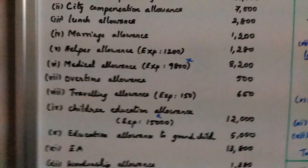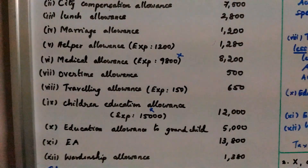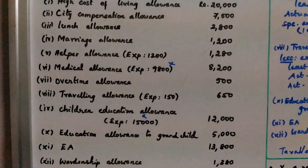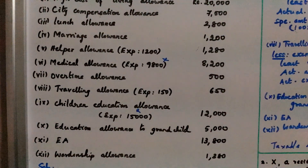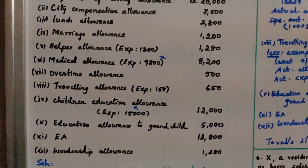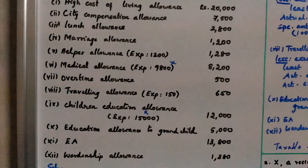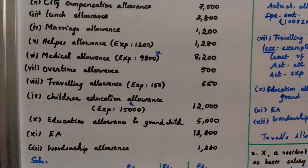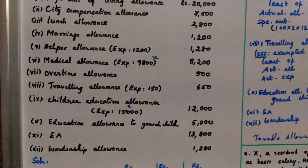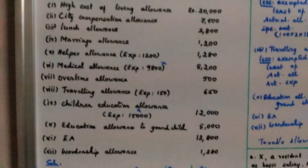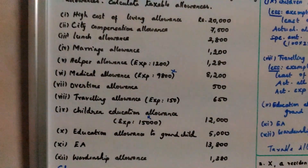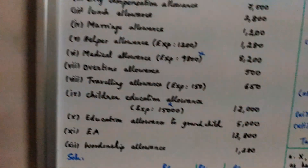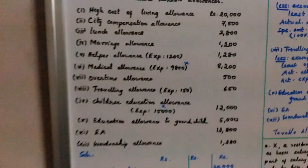Children Education Allowance: $12,000, actual expense $15,000. Education Allowance to Grandchild: $5,000. Entertainment Allowance (EA): $13,800. Wardenship Allowance: $1,380.